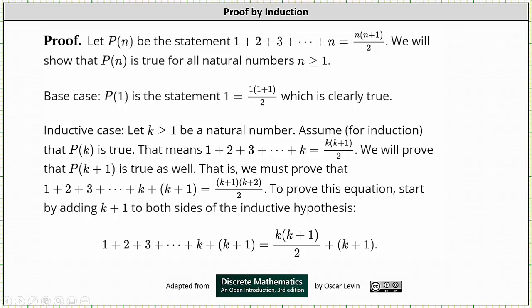So to begin the proof, let P(n) be the statement that we're trying to prove, which is 1 + 2 + 3 + ... + n = n(n+1)/2. We will show that P(n) is true for all natural numbers n ≥ 1.